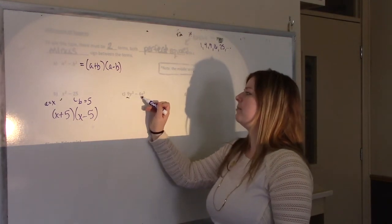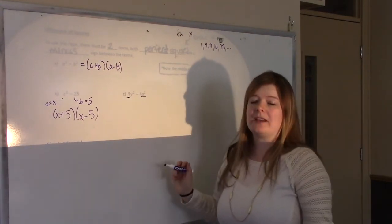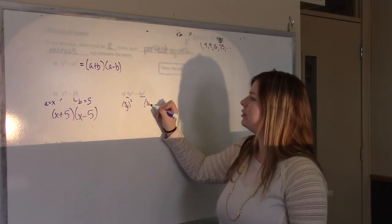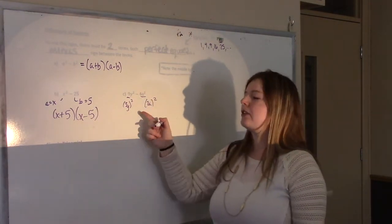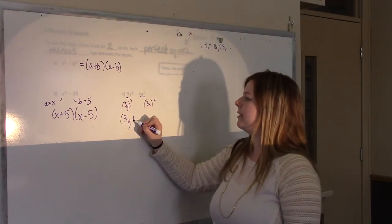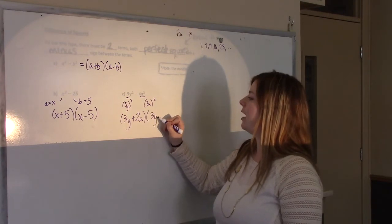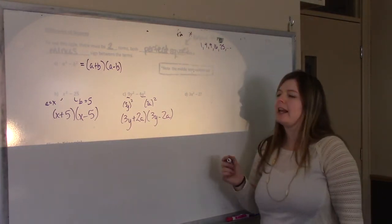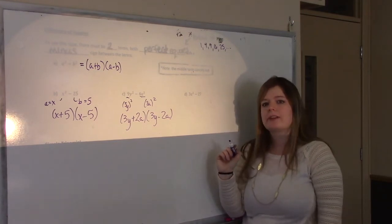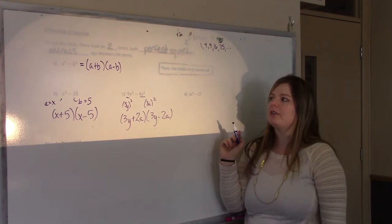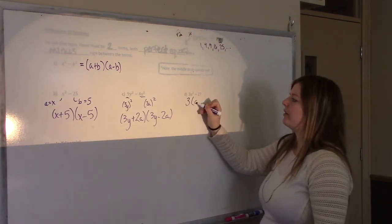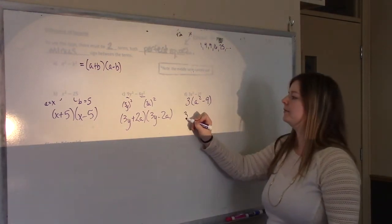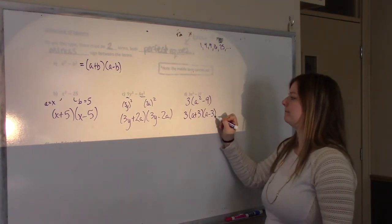For x² − 25: a = x and b = 5, because 5 is what's being squared to get 25. So it factors to (x + 5)(x − 5). You can FOIL it out and get back to x² − 25. For 9y² − 4a²: this is (3y)² − (2a)², which factors to (3y + 2a)(3y − 2a). For 3a² − 27: 3 and 27 have a common factor of 3. Remove the 3 first to get 3(a² − 9), and now that's a difference of squares: 3(a + 3)(a − 3).